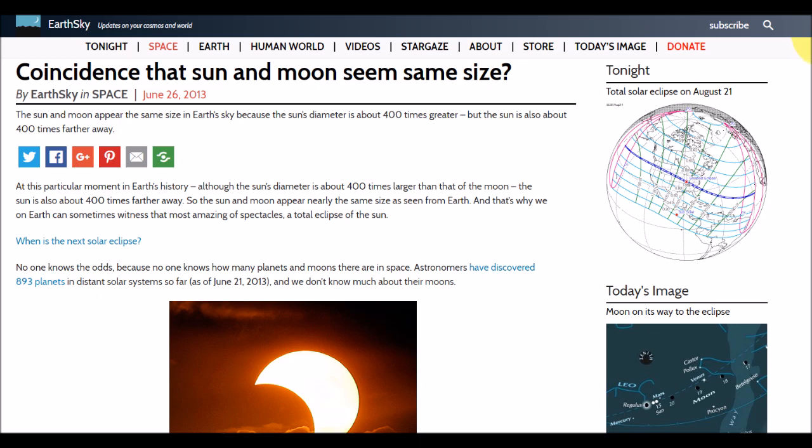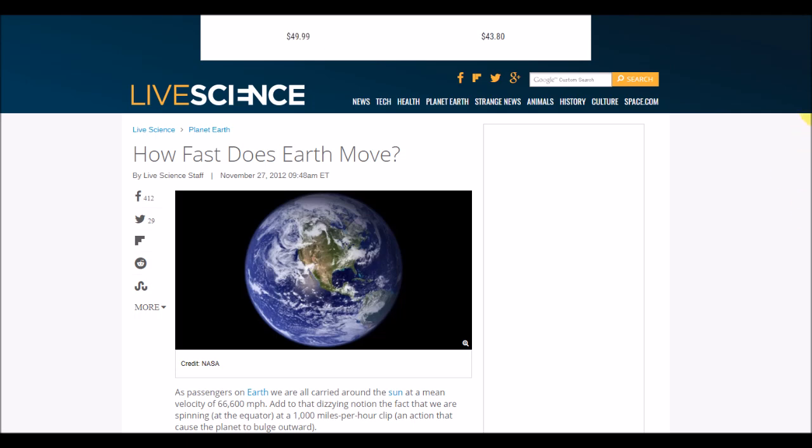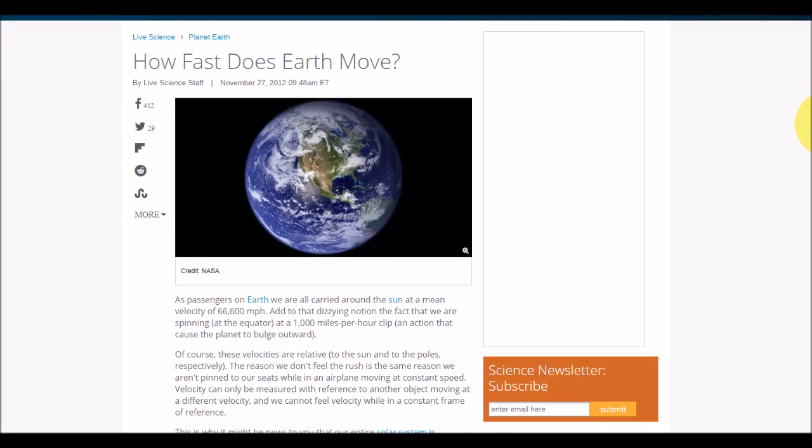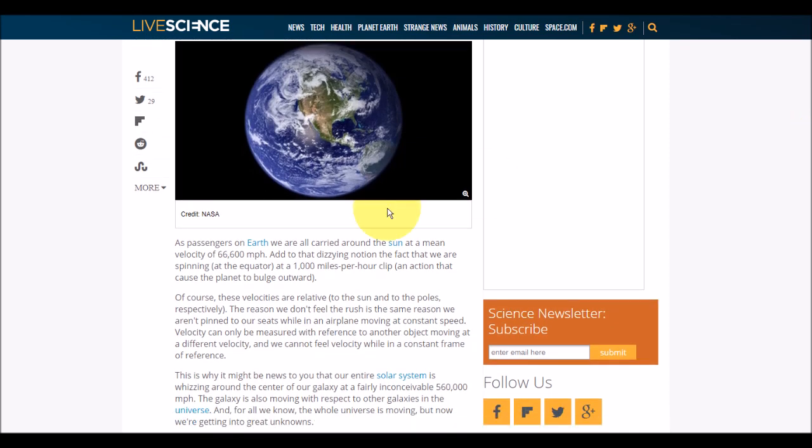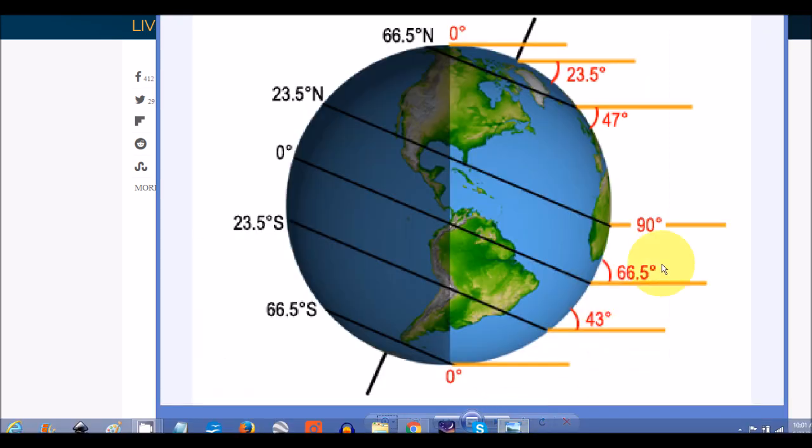They also want you to believe that the Earth is spinning around the Sun at exactly 66,600 miles per hour. But it doesn't stop there.